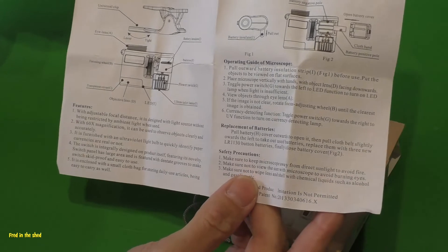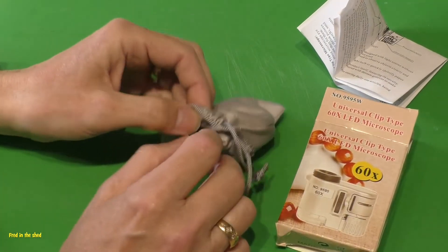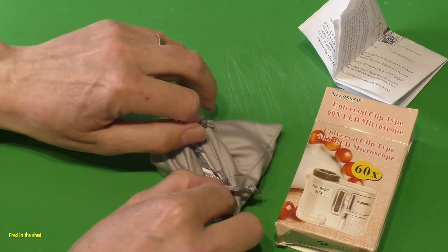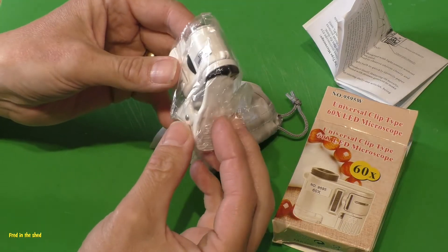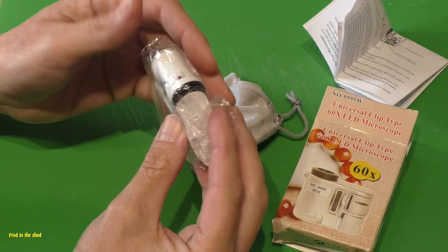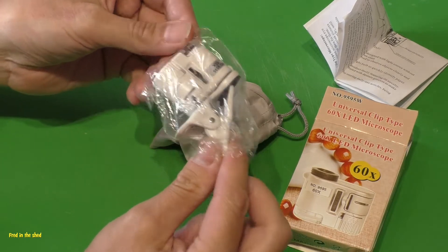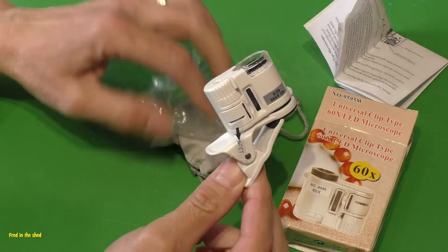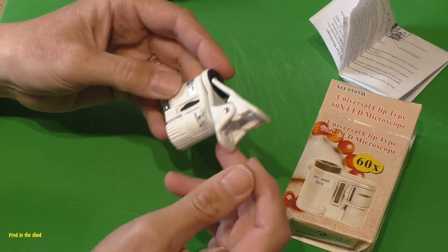Then we've got the microscope itself. It comes in one of these little cloth bags that they seem to send you from China. Here it is, all sealed up in plastic. The whole thing is made of plastic of course - I don't imagine there's any glass elements in this whatsoever, not for three pounds delivered.